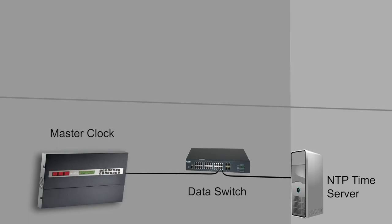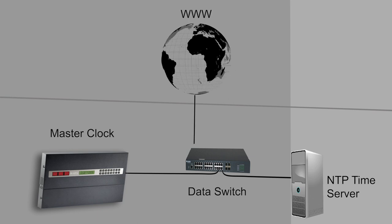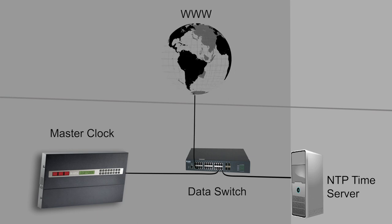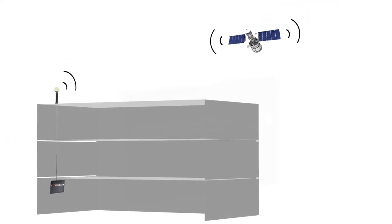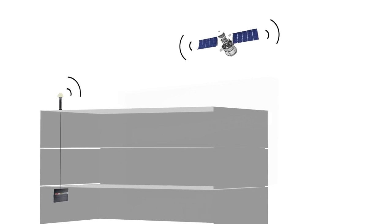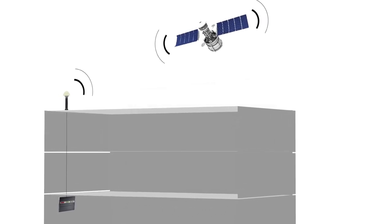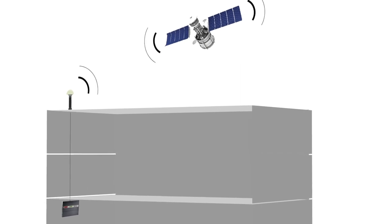Once the MasterClock has access and can communicate with the network, you can access its built-in web interface for easy configuration. This will allow the MasterClock to receive time data from an in-house NTP time server or from third-party NTP time servers as long as internet is available. If you have a MasterClock with a GPS receiver, follow the instructions in your manual to confirm that the GPS antenna and GPS cable have been installed properly.